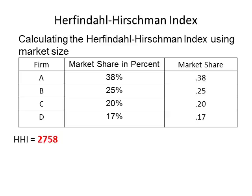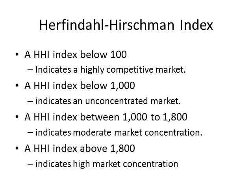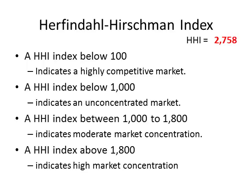Once the index has been calculated, it needs to be interpreted. The Herfindahl-Hirschman Index is interpreted using the following criteria: an HHI below 100 means the market is highly competitive; an HHI below 1,000 means the market is unconcentrated; an HHI between 1,000 and 1,800 means moderate concentration; and an HHI above 1,800 indicates high market concentration. Let's compare the calculated value against these criteria.